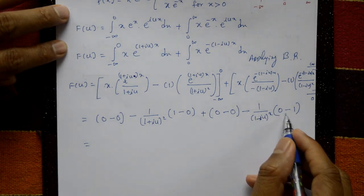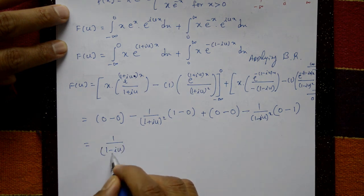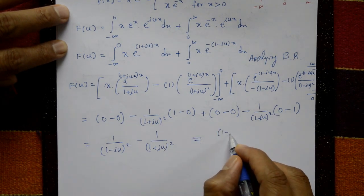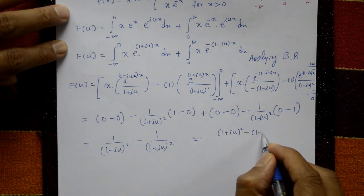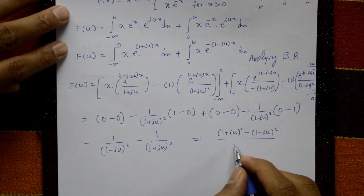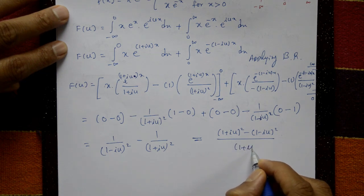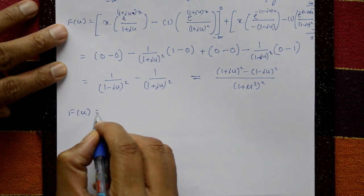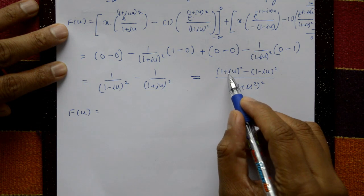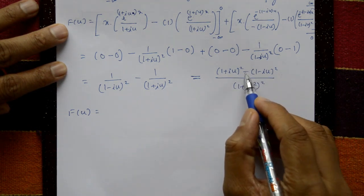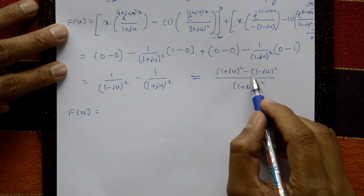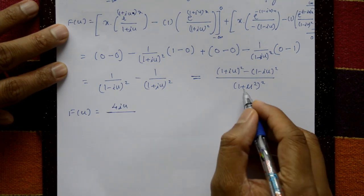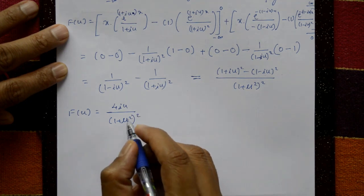After evaluating limits, F(u) = 1/(1-iu)² minus 1/(1+iu)². Taking LCM and cross-multiplying: numerator is (1+iu)² minus (1-iu)², denominator is (1+u²)². Expanding using (a+b)² - (a-b)² = 4ab, numerator becomes 4·i·u. So F(u) = 4iu/(1+u²)².